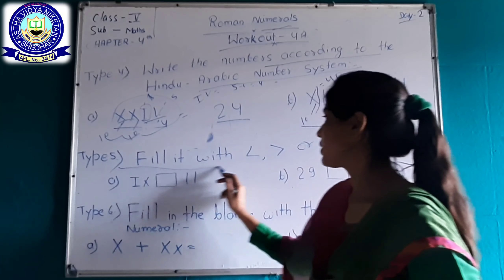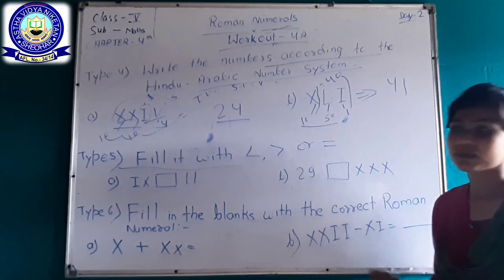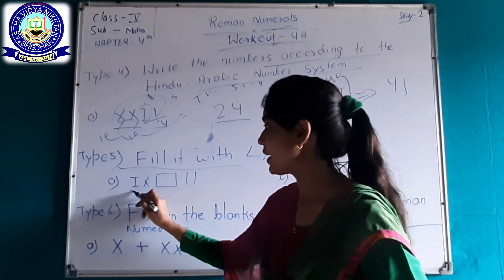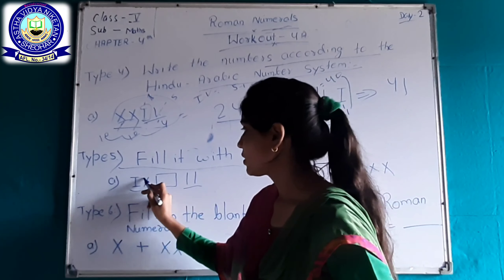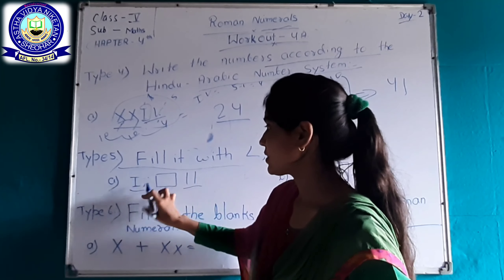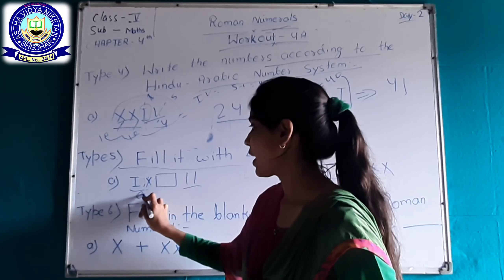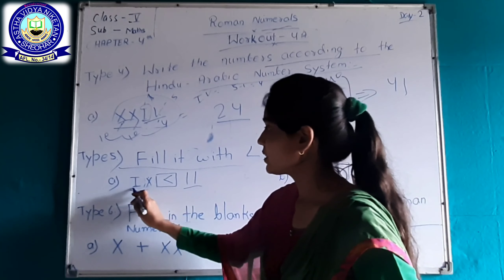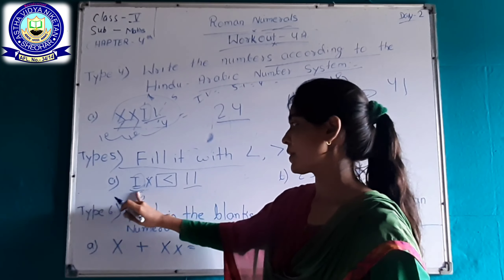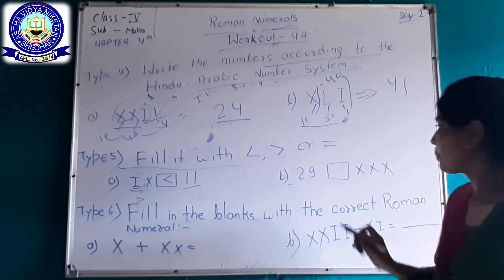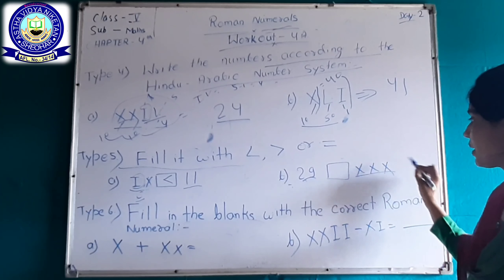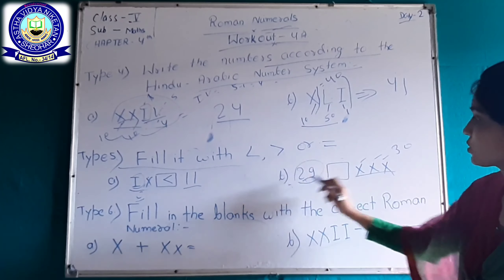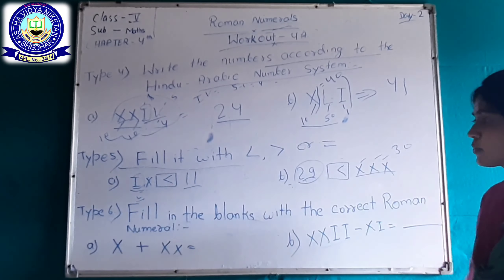Type 5 question: fill in the blanks with a smaller symbol, larger symbol, or equal to symbol. Here is IX and 11. The Hindu-Arabic numeral of IX is 9, and here is 11. Since I appears just before X, it is subtracted, giving 9. So 11 is greater than IX. Second example: here is 29 and triple X. Triple X means 30, and here is 29. So triple X is greater than 29.